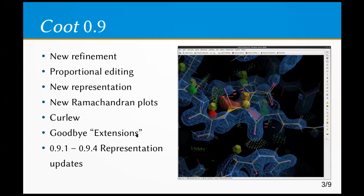Of note, the extensions menu item has disappeared. It seemed to me that it was not appropriate for Coot to be providing extensions — they should be done by third-party developers like Global Phasing, Phoenix, or CSP4. They provide those extra menu items, and tools should be built into the application or look as if they are. So those functions have moved into primarily the calculate, draw, and edit menus as sub-menus.